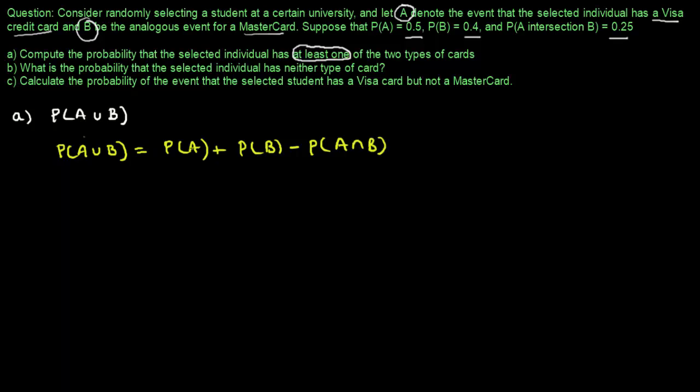We are given that probability of A is 0.5, probability of B is 0.4, and probability of A intersection B is 0.25. Solving this, we get 0.65. So the probability that the selected individual has at least one of the two types of cards is equal to 0.65.